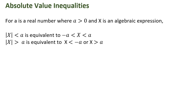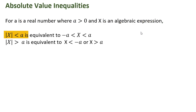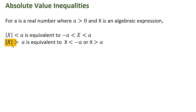For absolute value inequalities, where a is a real number greater than zero and X is an algebraic expression: when the absolute value of X is less than a, that's equivalent to X being between negative a and a, so negative a is less than X is less than a. And when the absolute value of X is greater than a, that's equivalent to X is less than negative a or X is greater than positive a. If we have less than or equal to or greater than or equal to, those equal signs carry over as well.